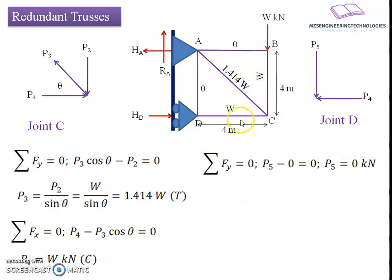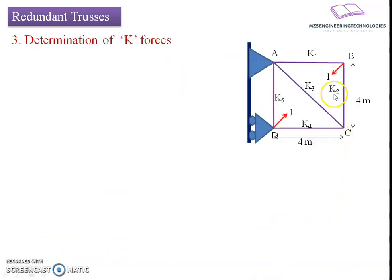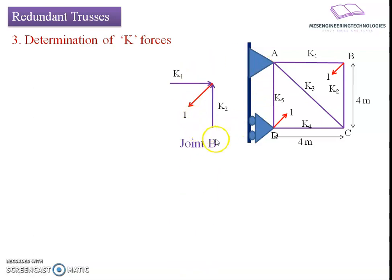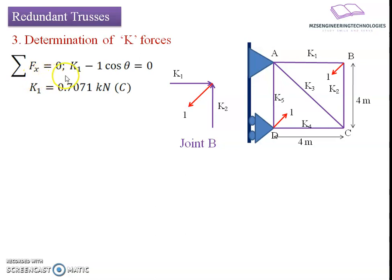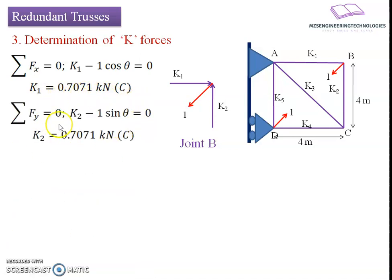Now we apply the unit load effect. We apply a unit load along member BD in the same manner as the original member would act — unit tensile load at joints B and D. We find the contribution of this unit load to all members using joint-by-joint analysis. At joint B: summation of Fx equals 0 gives K1 minus cos45° equals 0, so K1 equals 0.7071 kilonewton compressive. Summation of Fy equals 0 gives K2 minus sin45° equals 0, so K2 equals 0.7071 kilonewton compressive.